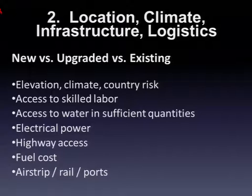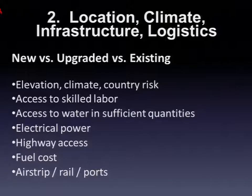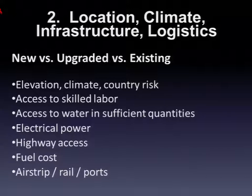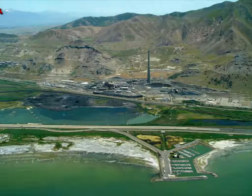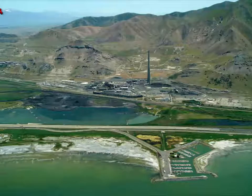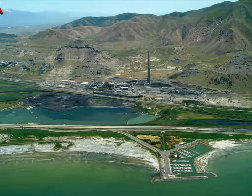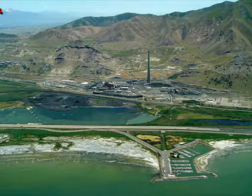Logistics and infrastructure: elevation, climate, access to skilled labor, water. It depends on whether you're in a positive or negative water balance situation. Positive water balance is like the Philippines and tropical regions of South America where you've got too much water. Negative water balance is like Nevada or Arizona where you're trying to hold onto your water rights. Highway access, deep water port, fuel cost — worked on a project recently where fuel in Venezuela was five cents a liter. Think of how massive something like the Kennecott Smelter is, just south of the lake here, with all the power, water, transport and access involved.